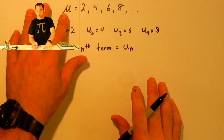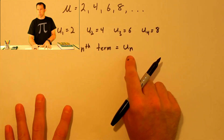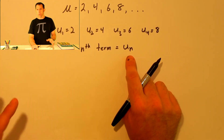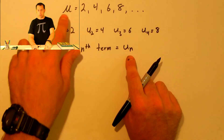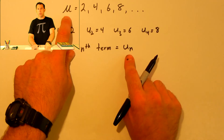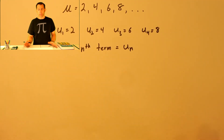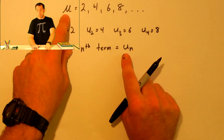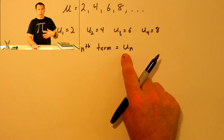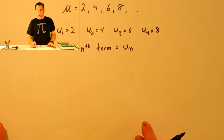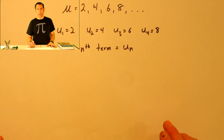This sequence can be called U, or sometimes it might be referred to as U sub n. So both U and U sub n can be used to refer to a sequence. It may not even be U — it could be A or anything. But in this example, we're using U to name the sequence.